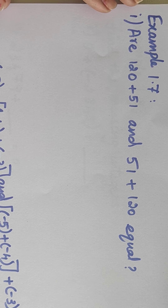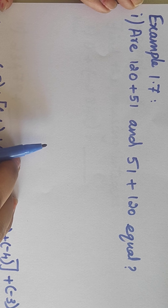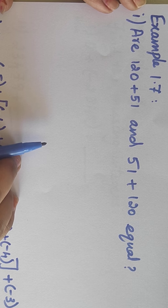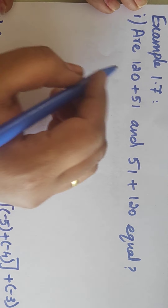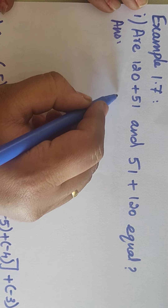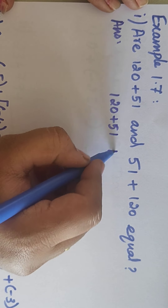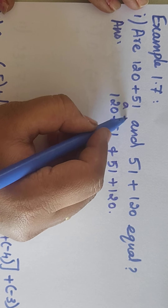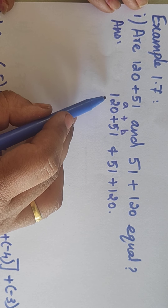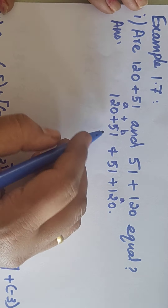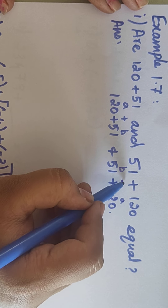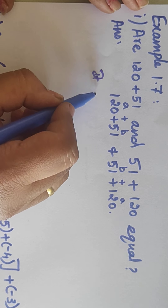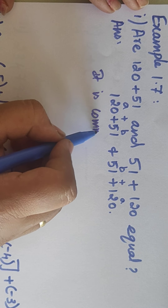Hi students, now we are going to see example 1.7. Are 120 plus 51 and 51 plus 120 equal? Now we have to find by using the property. We can name 120 as A and 51 as B. Now we have to write this operation with addition. While seeing this, we can clearly come to the conclusion that it is a commutative property.